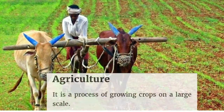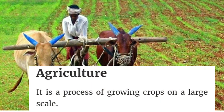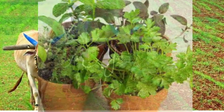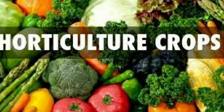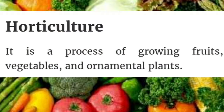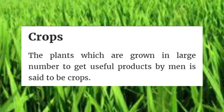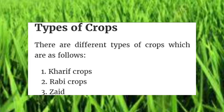What is agriculture? It is a process of growing crops on a large scale. A plant grown in a pot at home is not considered agriculture. The next is horticulture — it is a process of growing fruits, vegetables, and ornamental plants. There are different types of crops: Kharif crops, Rabi crops, and Zaid crops.